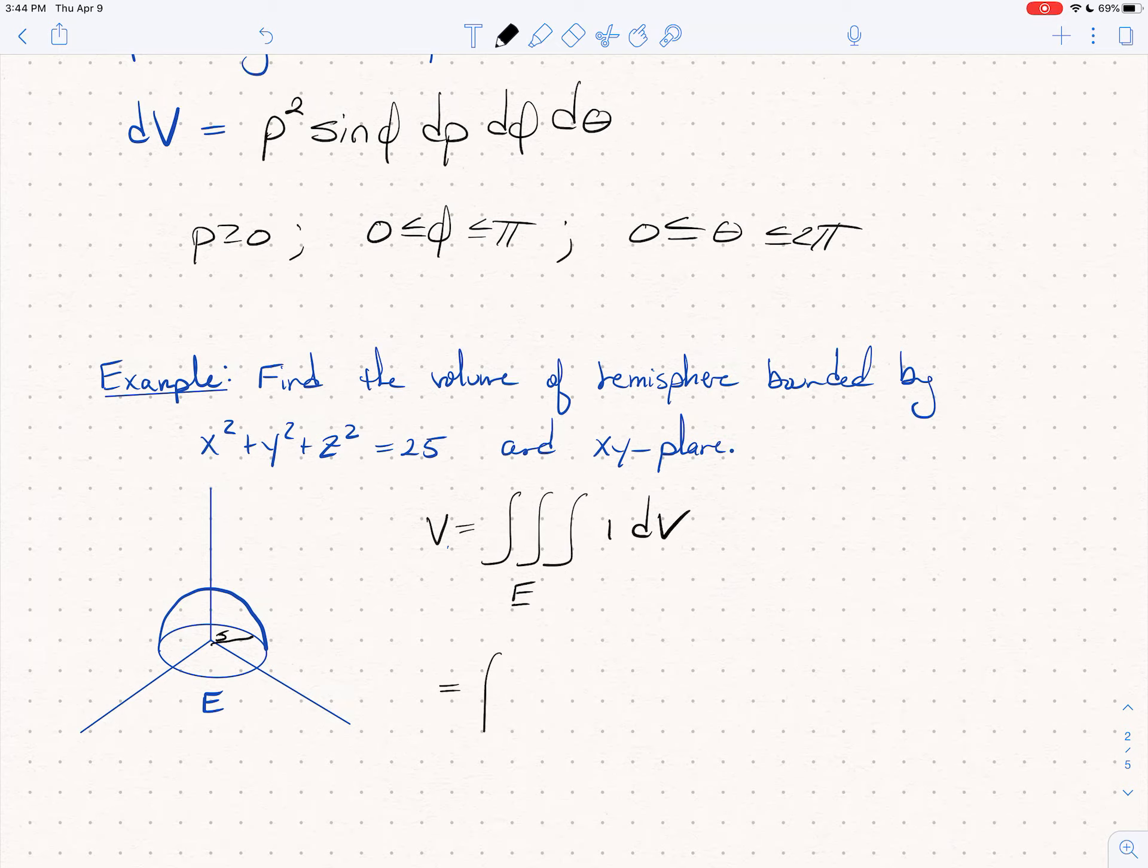And then you say, let's leave a little space because I'm going to have some interesting bounds on these integrals. I know that dV becomes rho squared sine phi d rho d phi d theta.